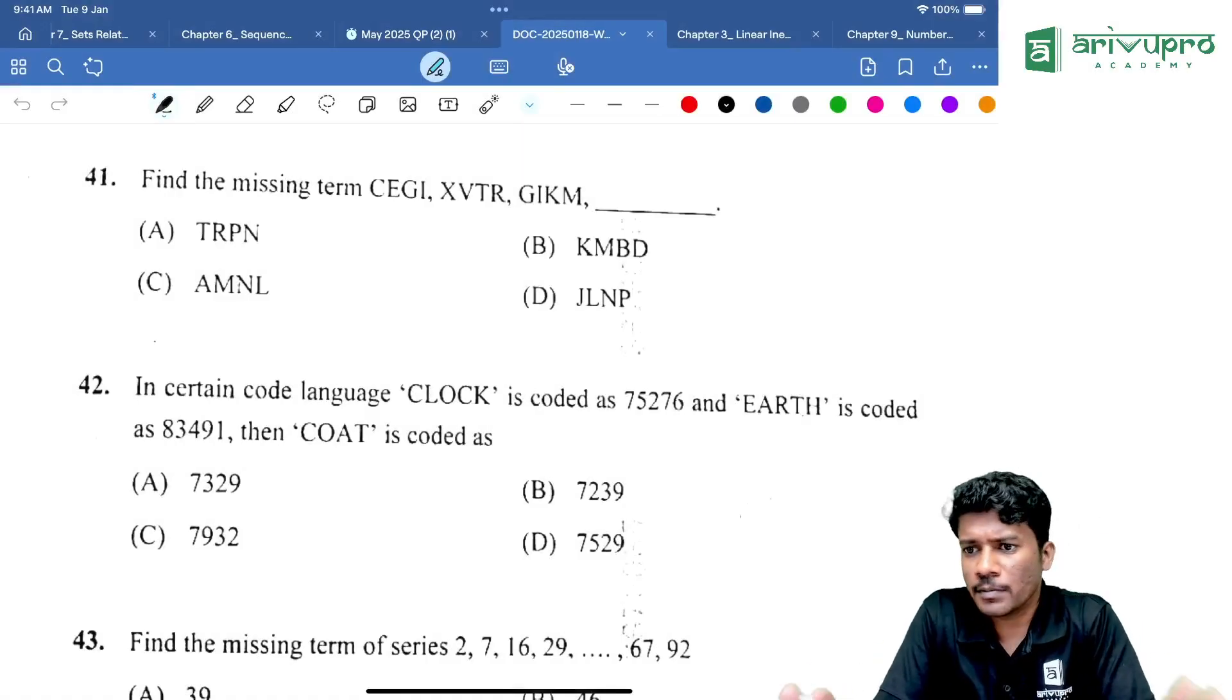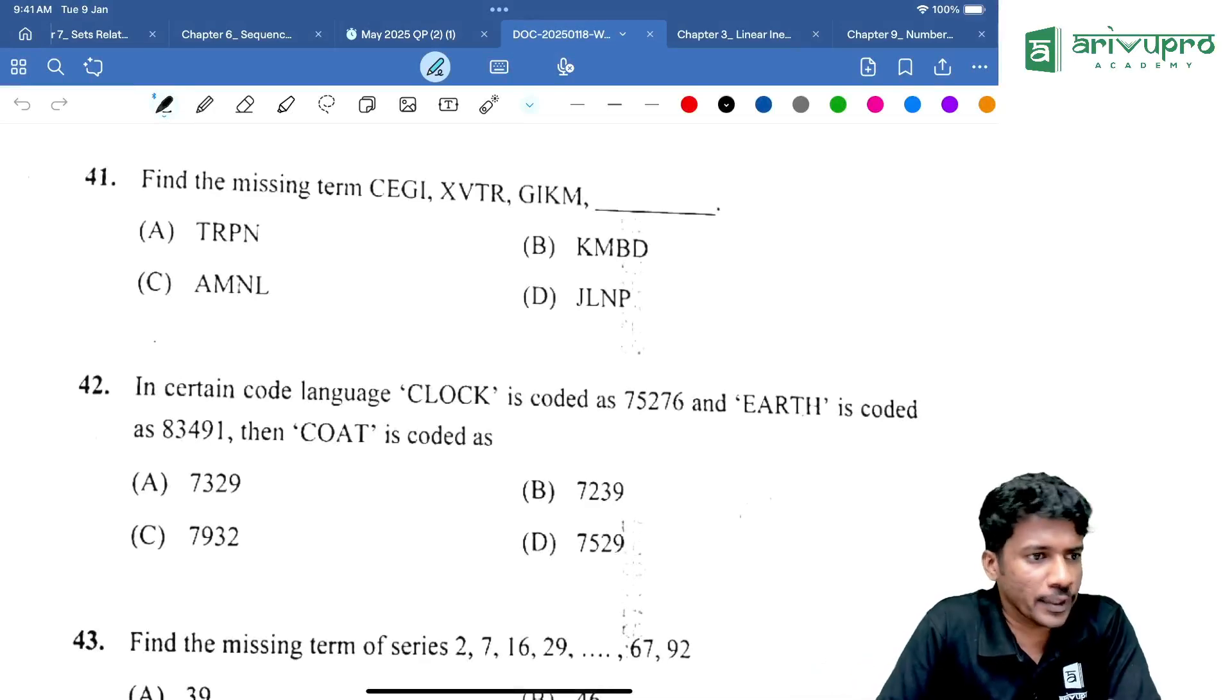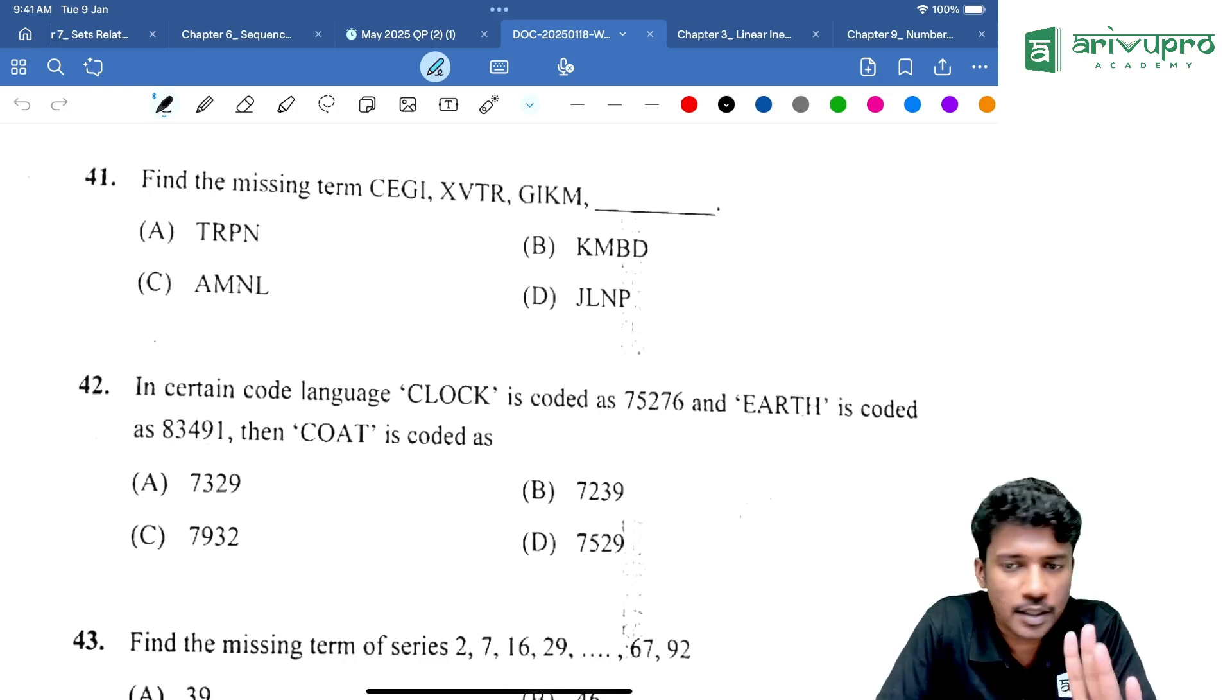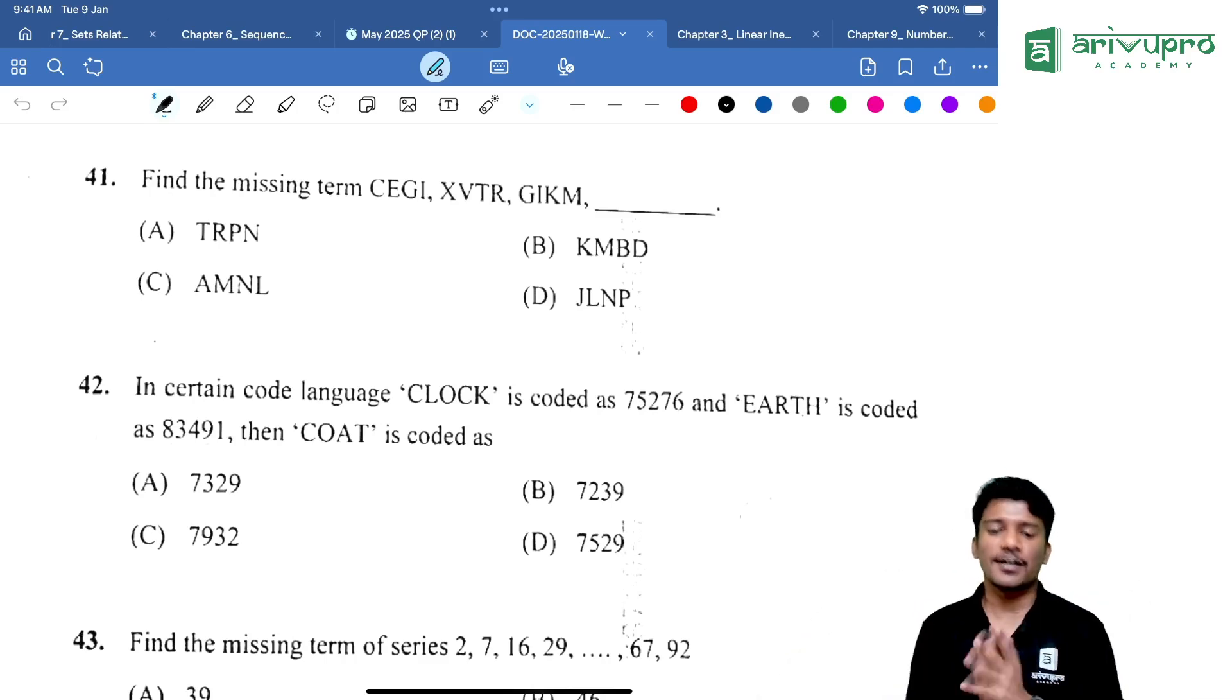We are going to solve questions from May and January 2025 question paper based on Chapter number 9, that is number series, odd man out, everything is there. Now first one.